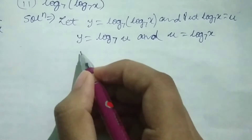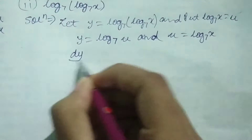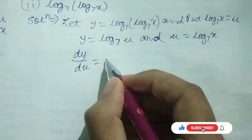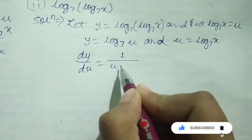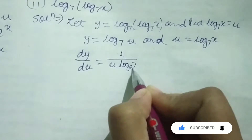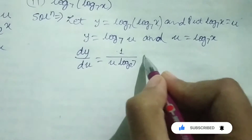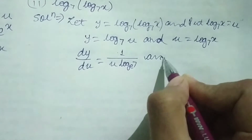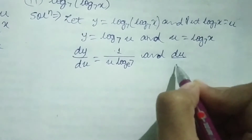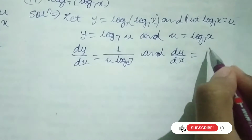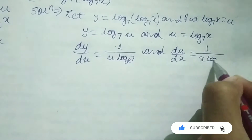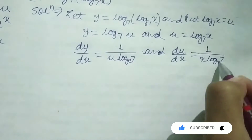Now differentiate y with respect to u. So differentiation of y with respect to u will be 1 upon u log 7 base e. And differentiation of u with respect to x will be 1 upon x log 7 base e.